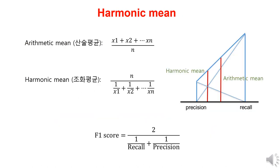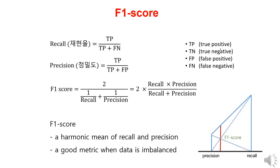Before discussing the F1 score, let's talk about arithmetic mean and harmonic mean. Arithmetic mean is obtained by summing up the numbers and dividing by the total count, while the harmonic mean is obtained by taking the reciprocals of the numbers, computing their arithmetic mean, and then taking the reciprocal of that mean. When there are extreme values, the arithmetic mean is heavily influenced and its meaning as an average becomes weak, while the harmonic mean penalizes the larger values. The F1 score is calculated through the harmonic mean of recall and precision. To calculate it, you multiply the product of recall and precision by 2, and then divide it by the sum of recall and precision.